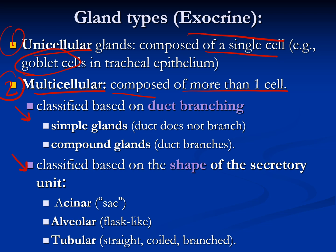Multicellular glands are classified using two criteria. The first criterion is duct branching: if the duct does not branch, we call it a simple gland; if the duct branches, we call it a compound gland. The second criterion depends on the shape of the secretory unit, since a gland consists of both a duct and a secretory unit.